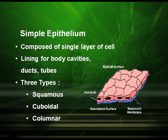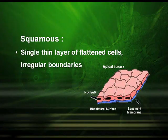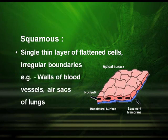The three types are squamous, cuboidal, and columnar. Squamous epithelial tissues are a single thin layer of flattened cells with irregular boundaries. Examples include the wall of the blood vessels and the air sacs of the lungs.